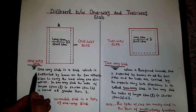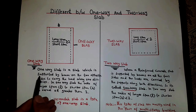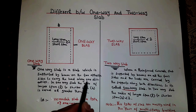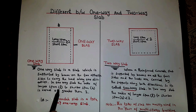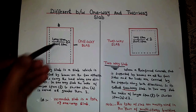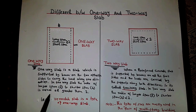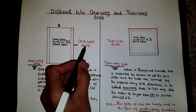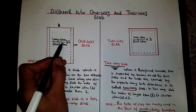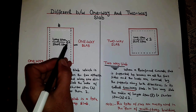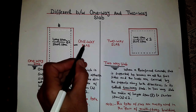A one-way slab is a slab which is supported by beams on two opposite directions to carry the load along one direction. In a one-way slab, the ratio of the longer span L to the shorter span B is equal to or greater than two. So if longer span divided by shorter span gives an answer of two or more, it will be a one-way slab.